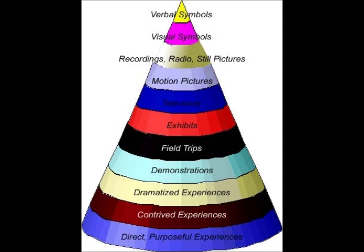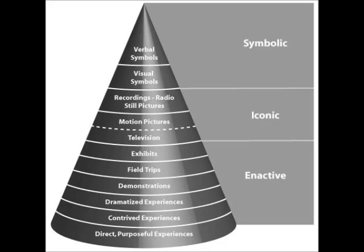Edgar Dale's Cone of Experience is a visual representation of the types of experiences human beings encounter as they prepare to synthesize knowledge and convert it to understanding. Dale contends that there are many different types of experiences that humans can encounter, and each level of experience results in a different level of effectiveness as it relates to the processing of knowledge. Dale divided his cone into three major categories of experiences, ranging from the most abstract to the least abstract as one travels down the cone from the top to the bottom.